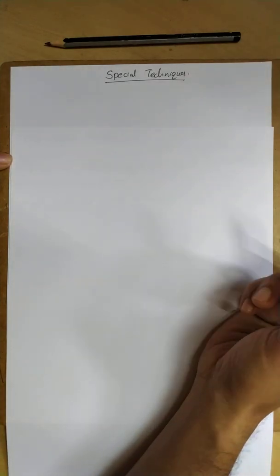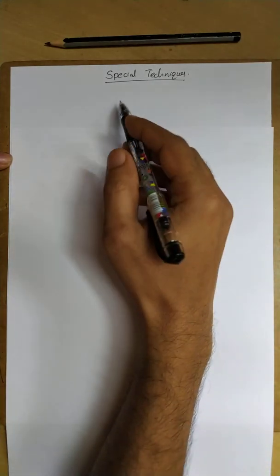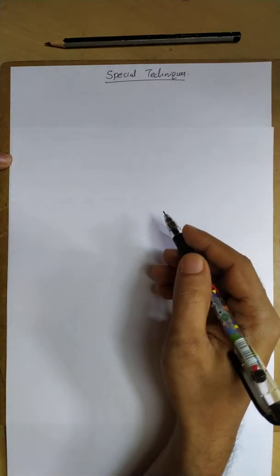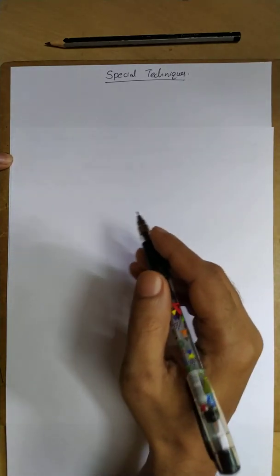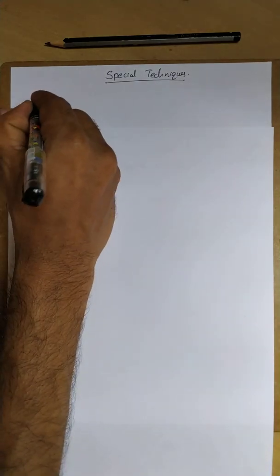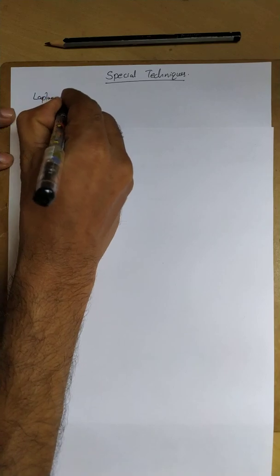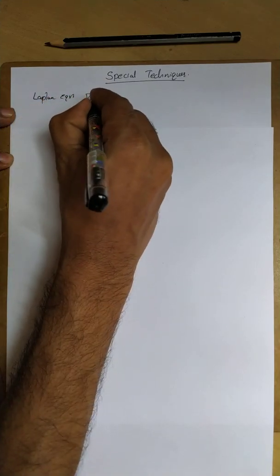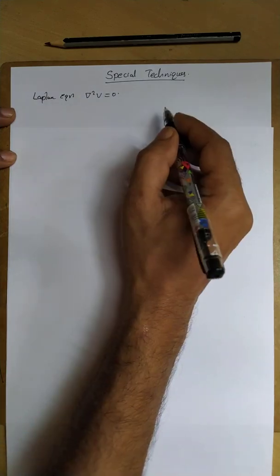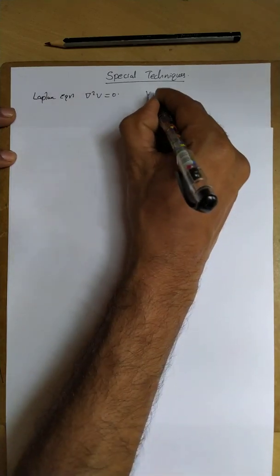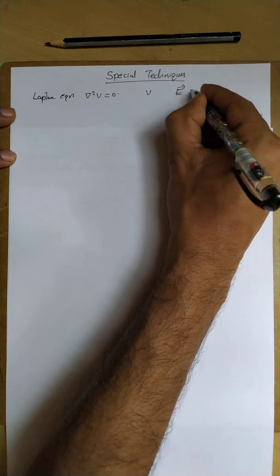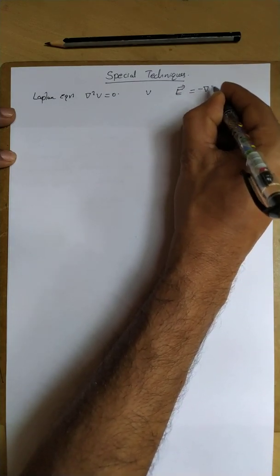Welcome back. In this lecture, I am going to introduce some special techniques to solve a problem in electrostatics. The straight method to solve a problem in electrostatics is to solve the Laplace equation — del squared V equals zero — using suitable boundary conditions and get V. Once we get V, we can find the electric field as the negative gradient of potential.